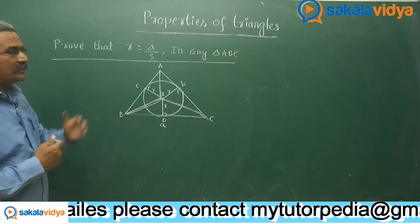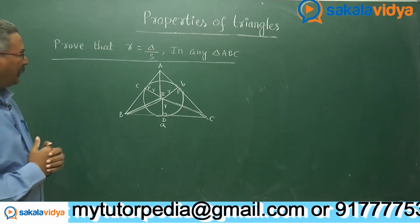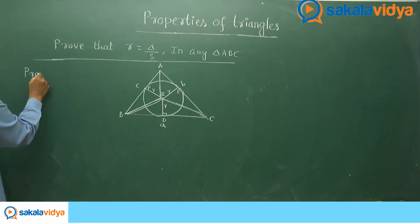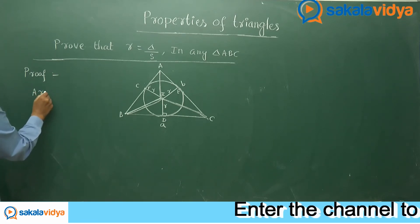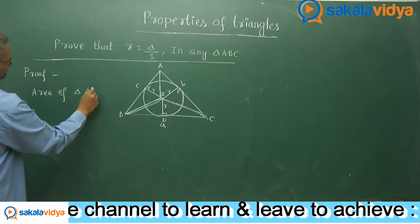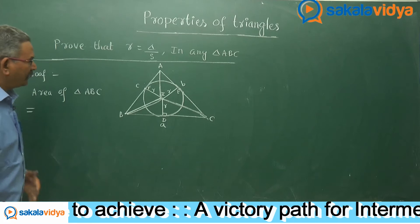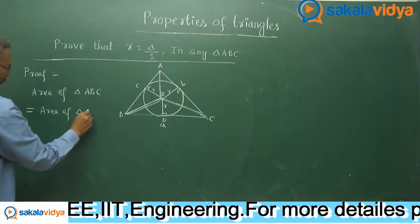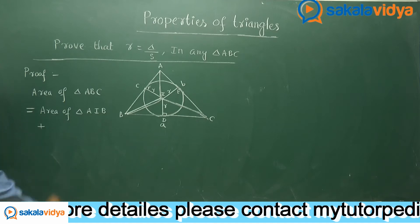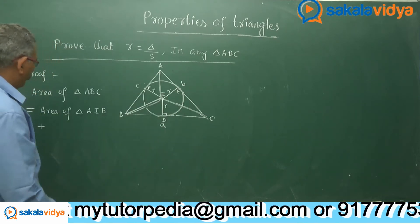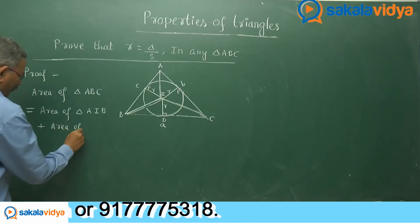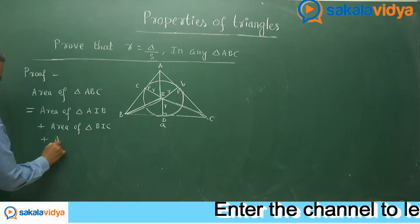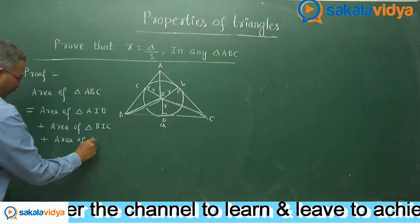The sum of the areas of these three triangles equals the area of triangle ABC, which is delta. So if we can find these areas, we can formulate small r equals delta by s. Let us write delta equals area of triangle AIB plus area of triangle BIC plus area of triangle AIC.